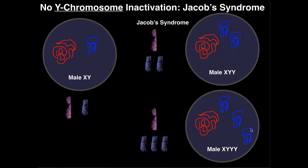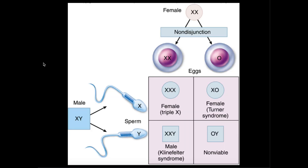To understand how that occurs, I want to go back and look briefly at something we talked about in the previous video. This was a Punnett Square where we talked about how we can develop these other conditions, which are aneuploidies of the X chromosome — for example, XXX syndrome, Turner syndrome, and Klinefelter syndrome.